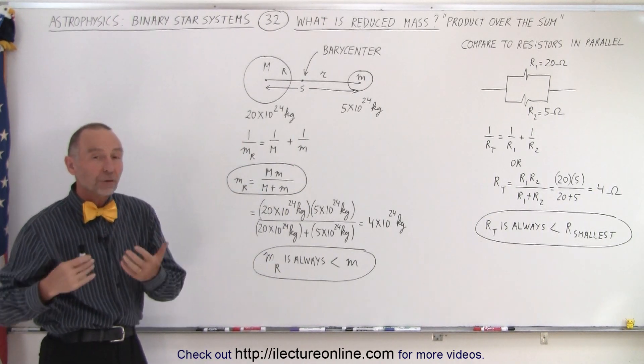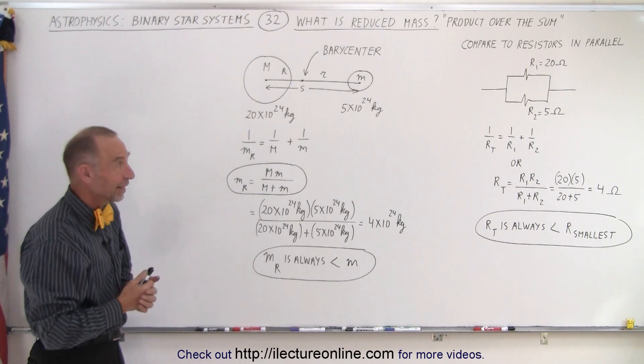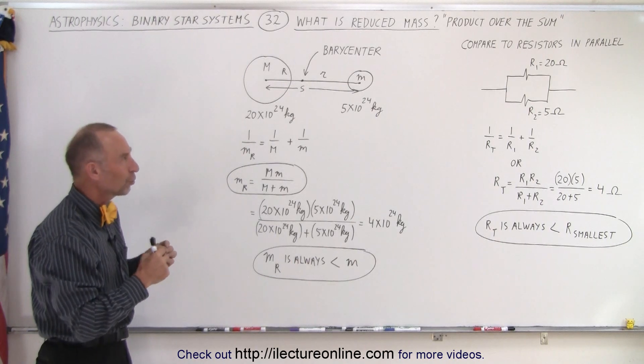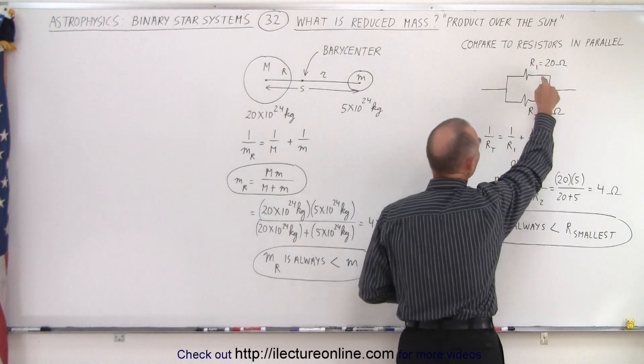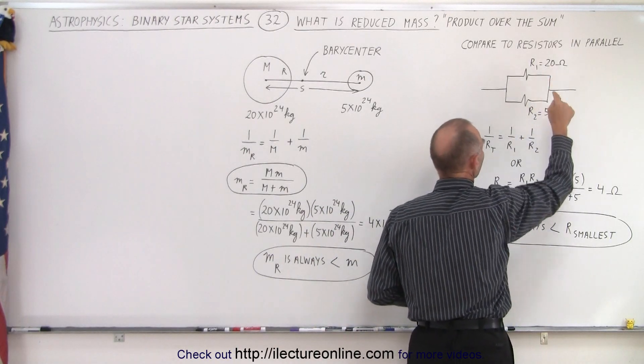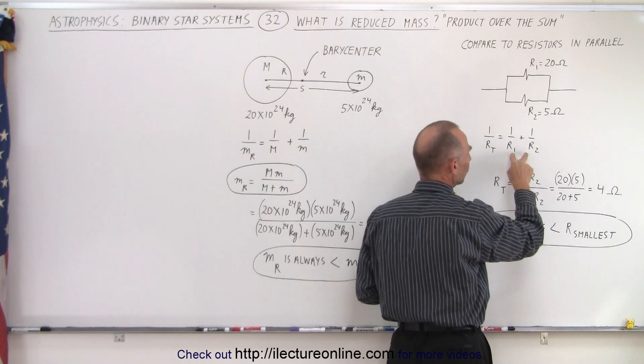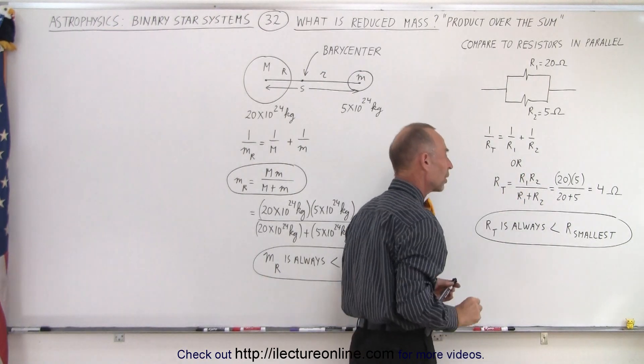But does that remind us of some other equation in physics? Matter of fact there's quite a few equations of physics like that but one of them is how we calculate the total resistance of two resistors in parallel. So let's say we have two resistors in parallel. Notice we have a 20 ohm resistor and a 5 ohm resistor. This is the equation to calculate the total resistance but since there's only two of them here we can convert that to a product over the sum equation.